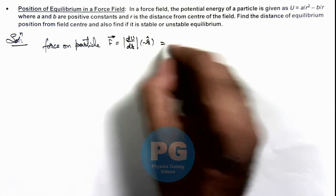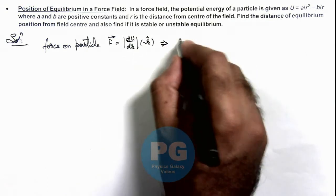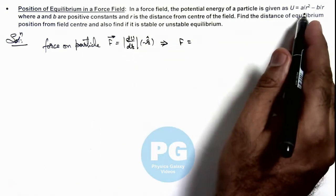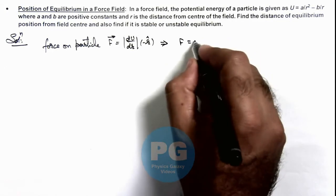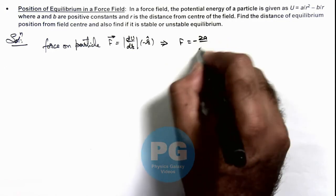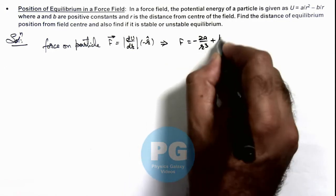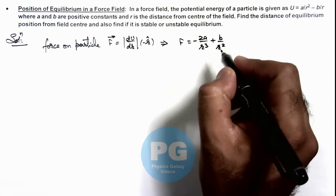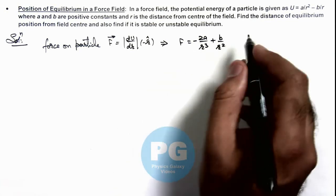Now if we differentiate to get the magnitude of this force, that is -2a/r³ + b/r². So this is the magnitude of force acting on the particle.